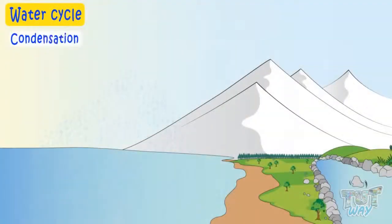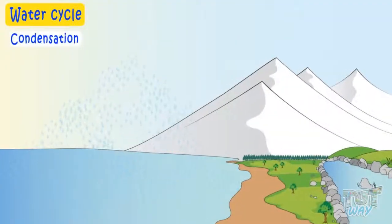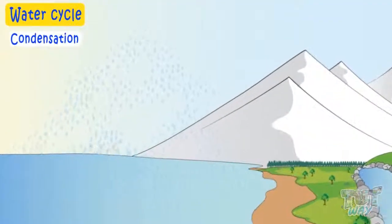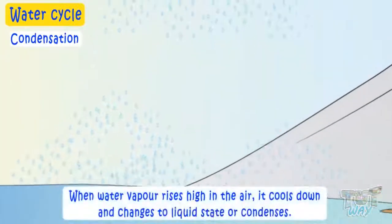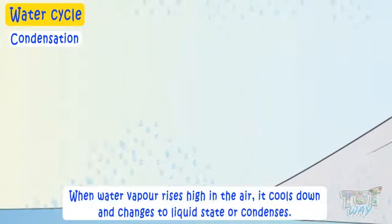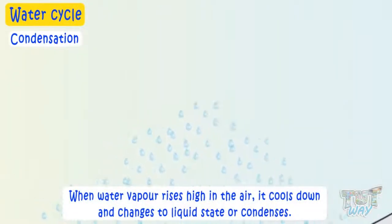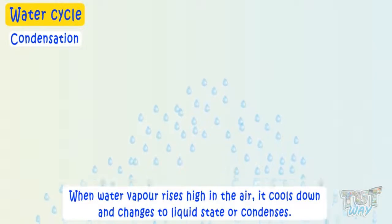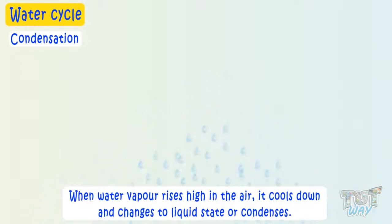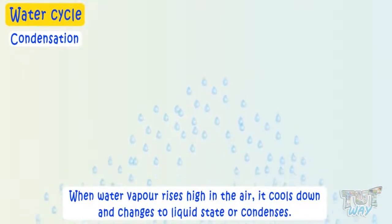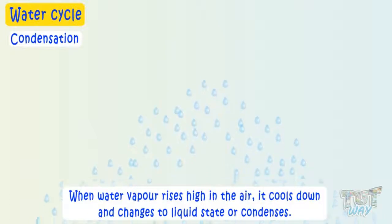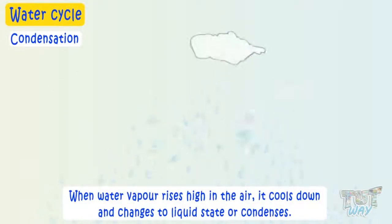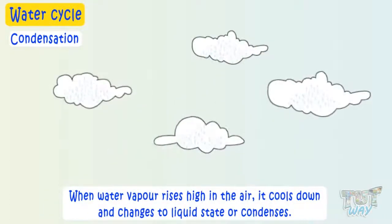There are water vapors all over in the air. And when these water vapors rise high in the air, they cool down and change to liquid state, or condense, and form big clouds in the air.